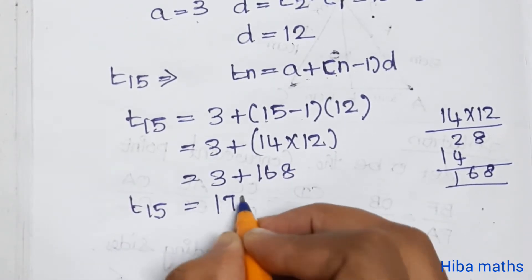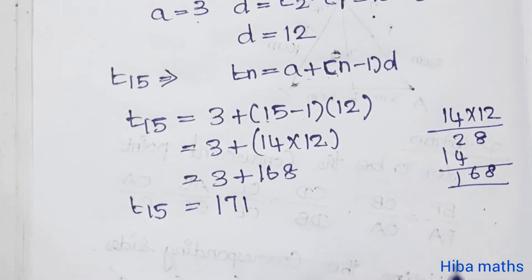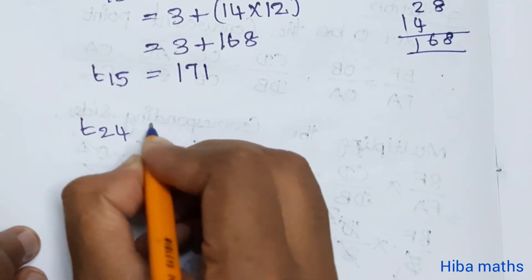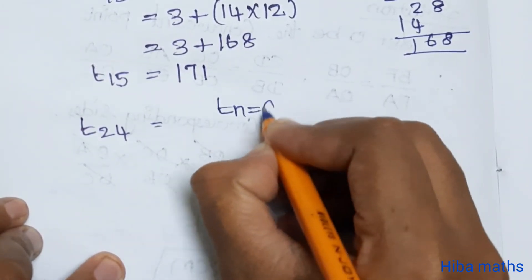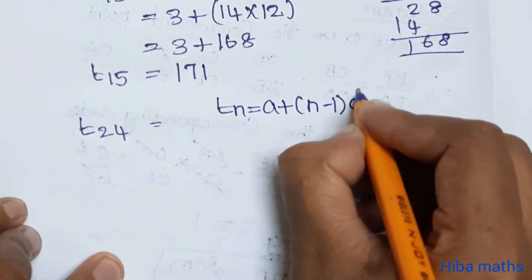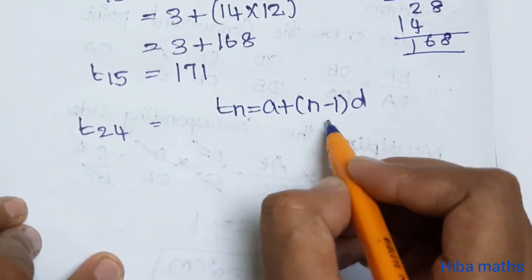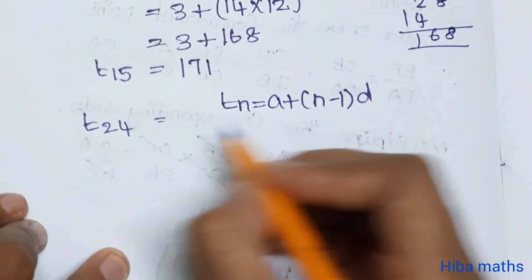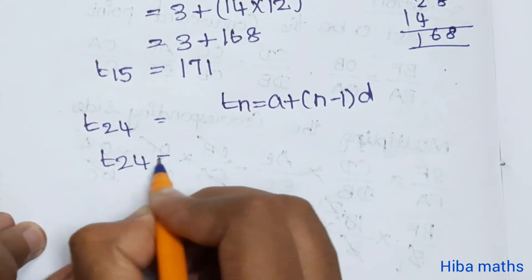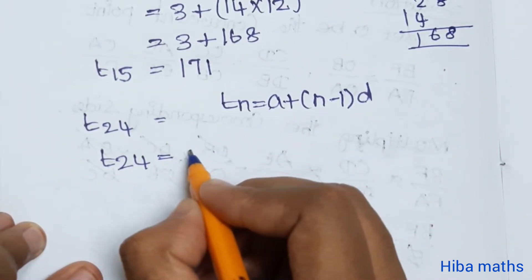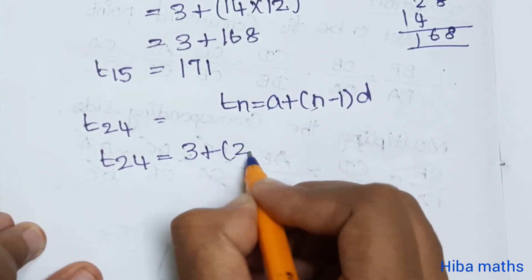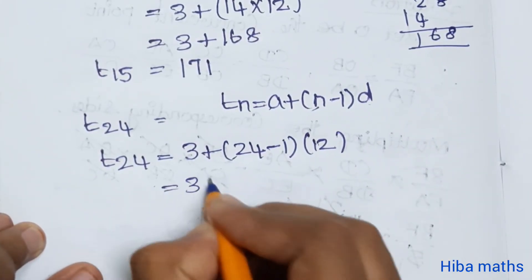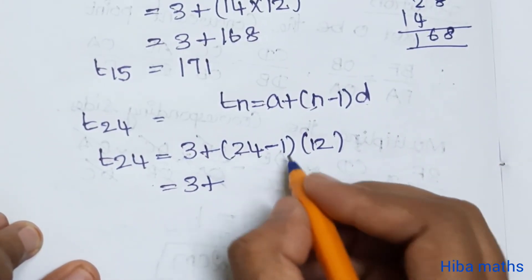So t of 15 value is 171. If you understand, the second value is t of 24. So that is t of n formula. This formula is very important. T of n is equal to a plus n minus 1 into d. A value is 3, d value is 12, and n is 24 replace.